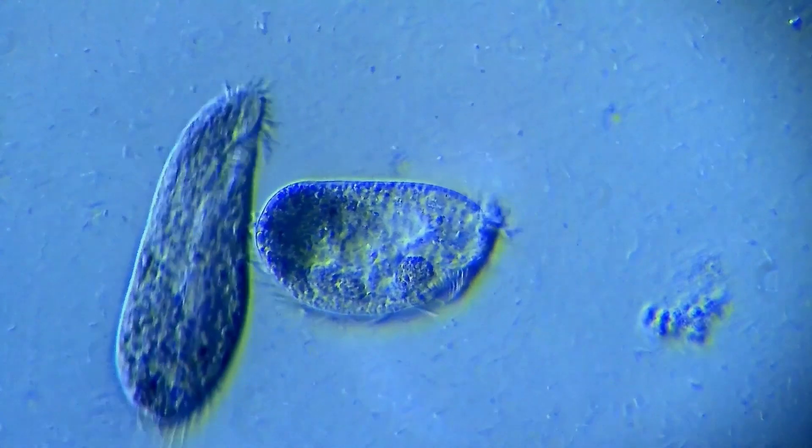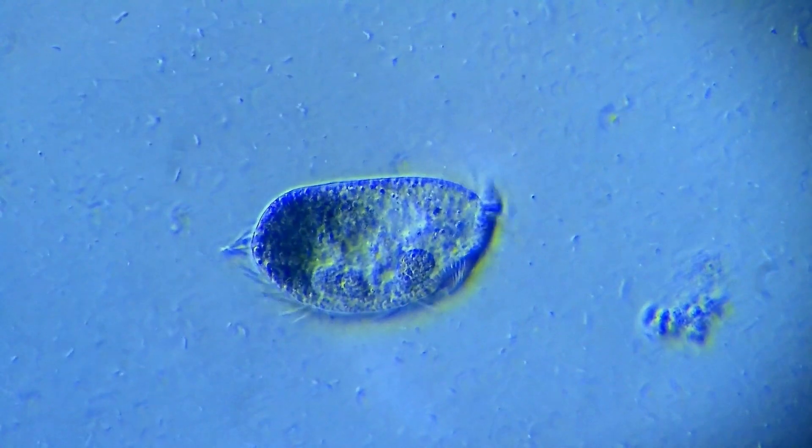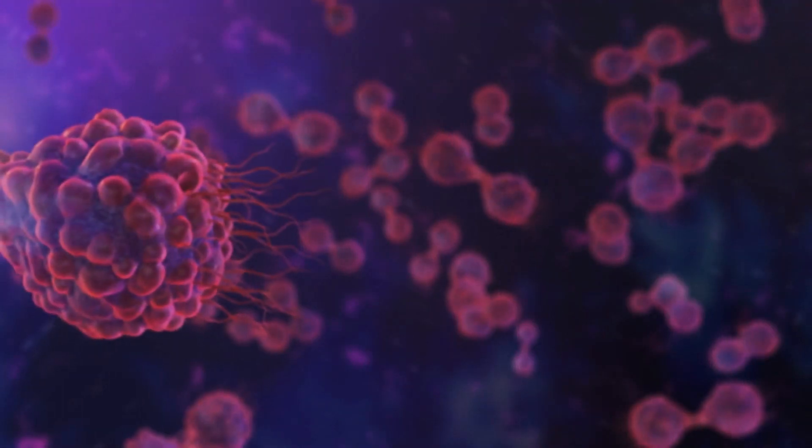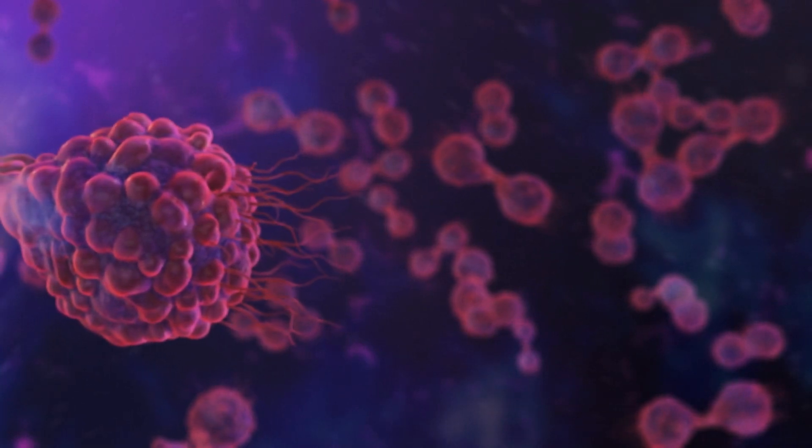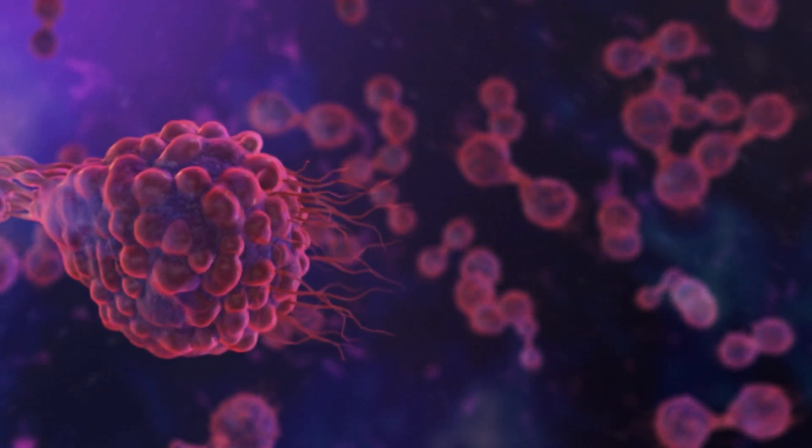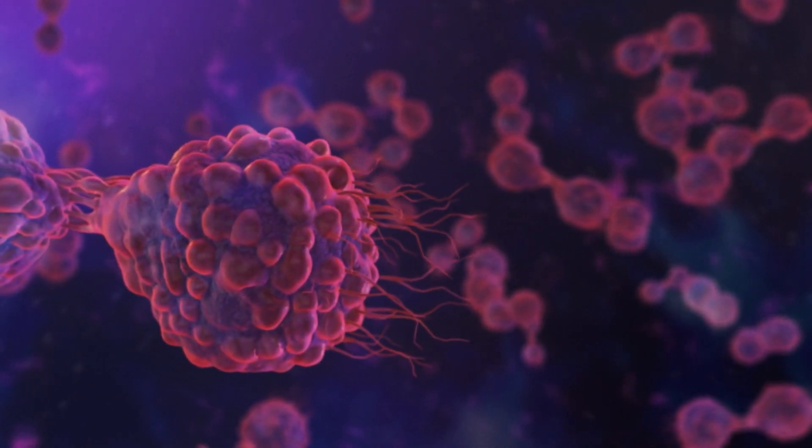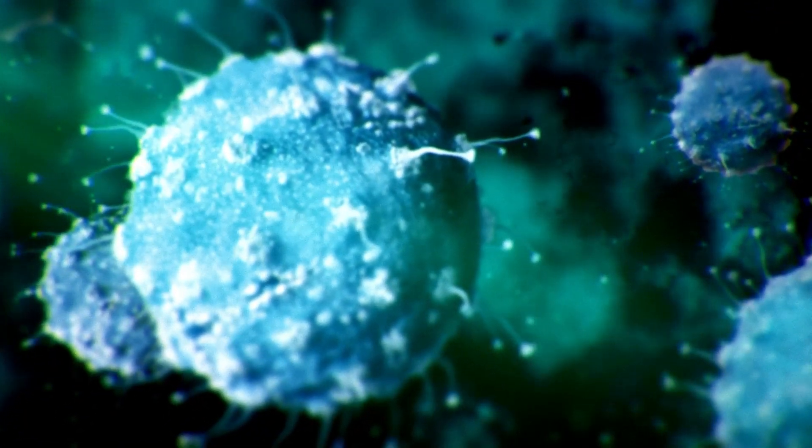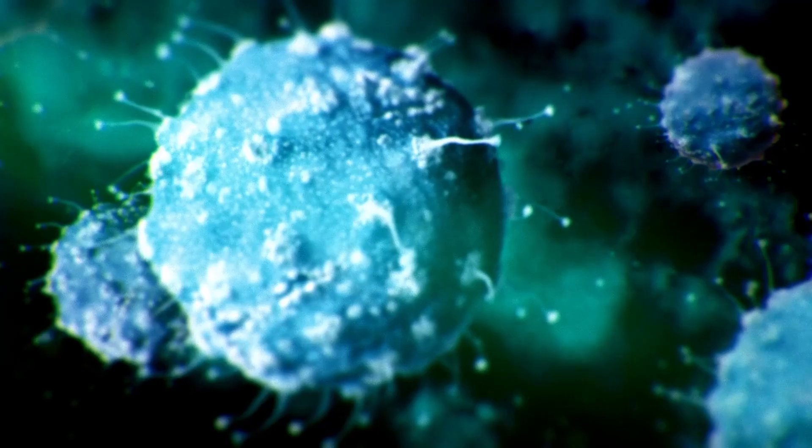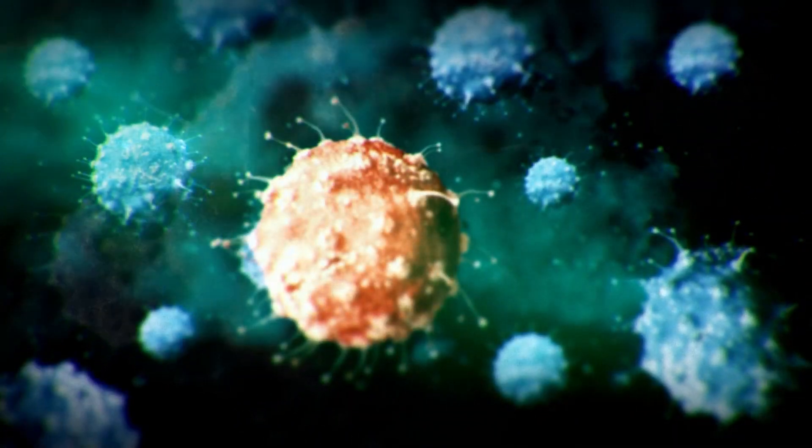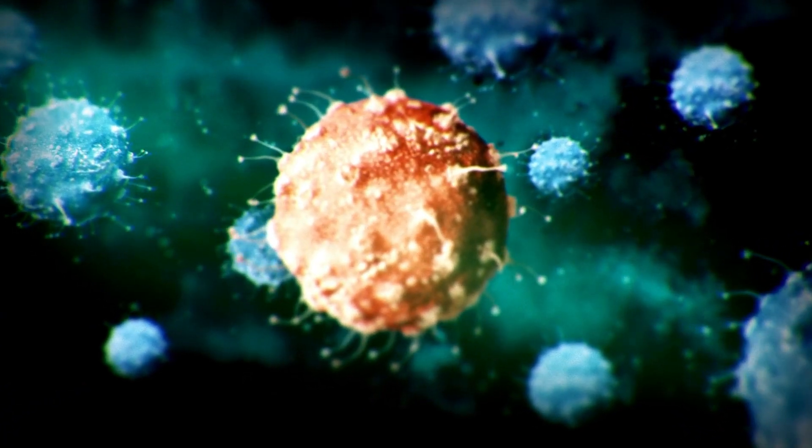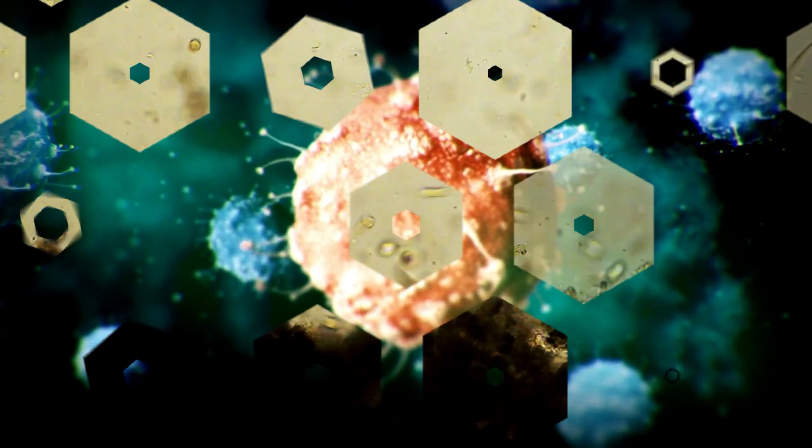The answer lies in the emergence of a revolutionary type of organism: photosynthetic cyanobacteria. These ancient microorganisms were able to harness the power of the sun and convert it into chemical energy through a process called photosynthesis. They were the first organisms on Earth to produce oxygen as a byproduct of this process. This oxygen accumulated in the atmosphere and oceans, leading to a dramatic increase in the levels of oxygen in the environment.